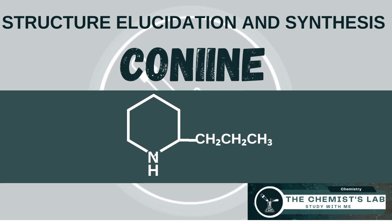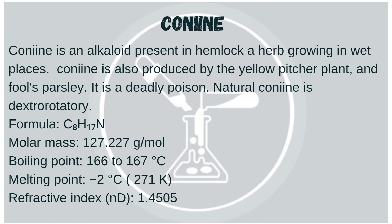Today, we're going to be discussing the structure elucidation and synthesis of a chemical compound called conine. Conine is an alkaloid present in hemlock, a herb growing in wet places. Conine is also produced by the yellow pitcher plant and fool's parsley. It is a deadly poison.